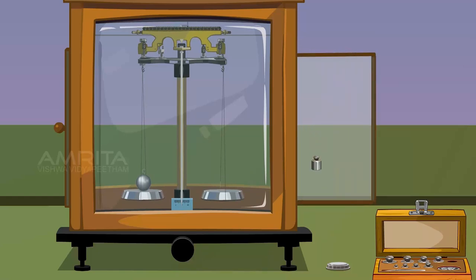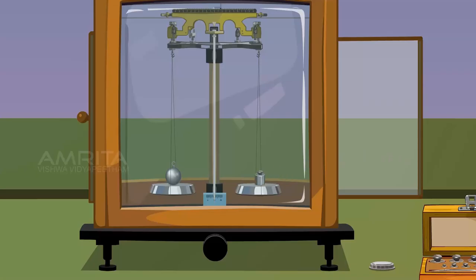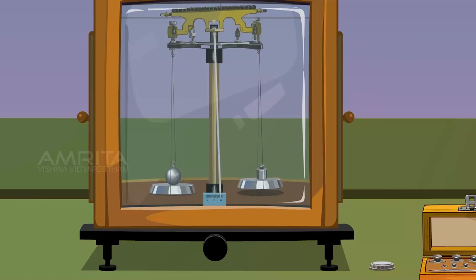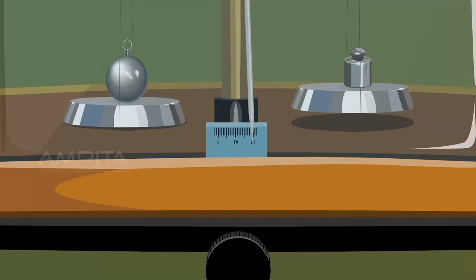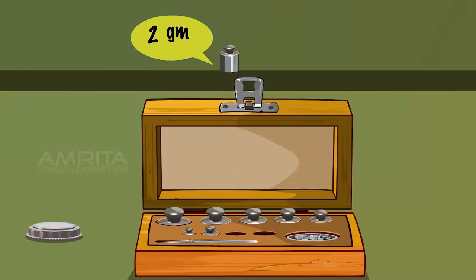Change the weight. Now place 5g. Release the balance. The pointer stands in the right. Then we place 2g and oscillate.